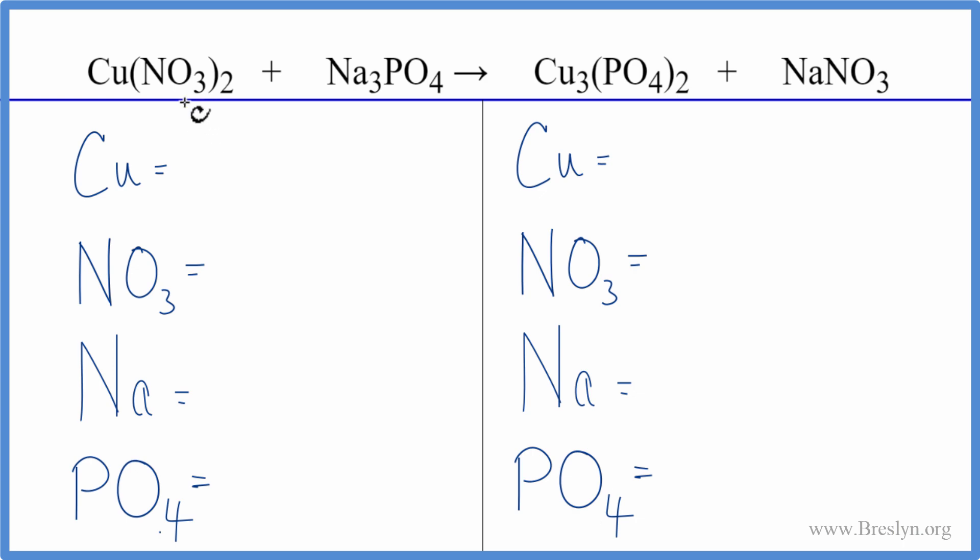When we have these double displacement reactions, when we're trying to balance them, it's really helpful to use this trick. We can think of the polyatomic ions, this nitrate NO3, as one thing if we have it here and it stays together and we have it here.